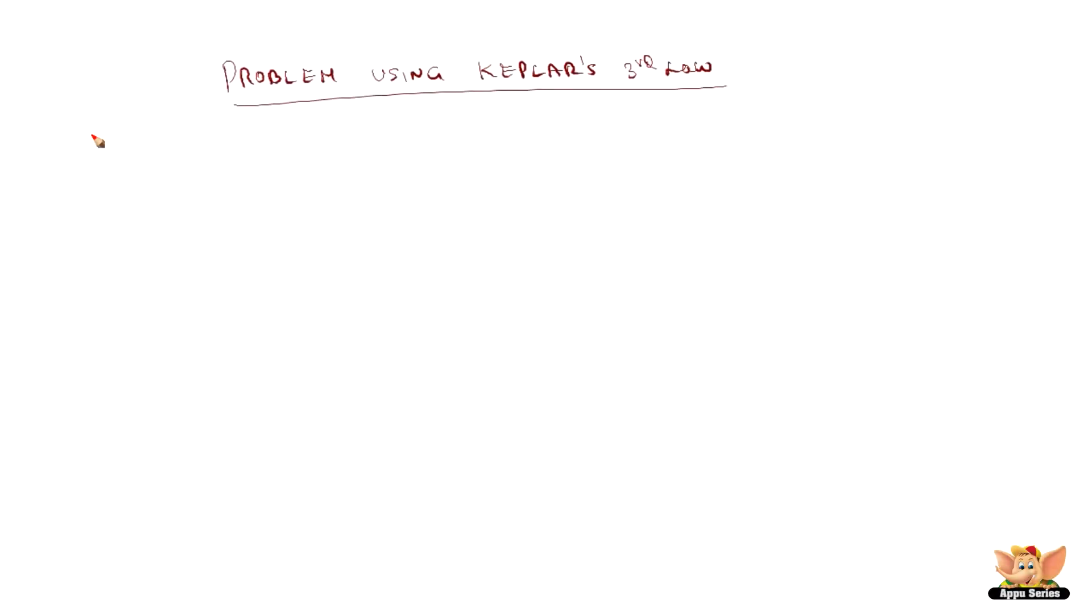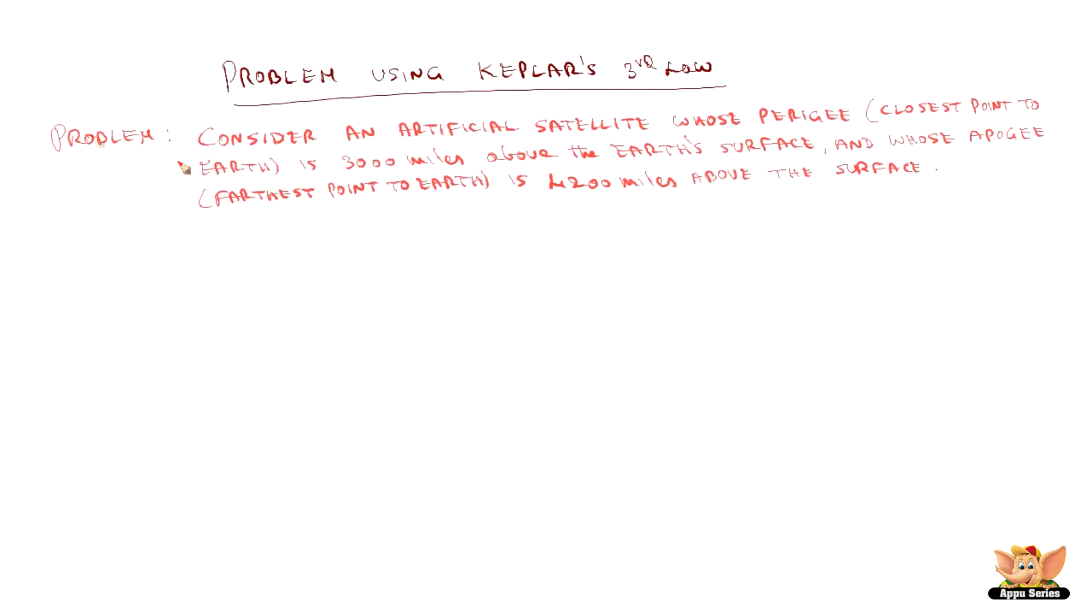Problem using Kepler's third law. The problem is, consider an artificial satellite whose perigee, i.e. the closest point to the earth is 3000 miles above the earth's surface and whose apogee,